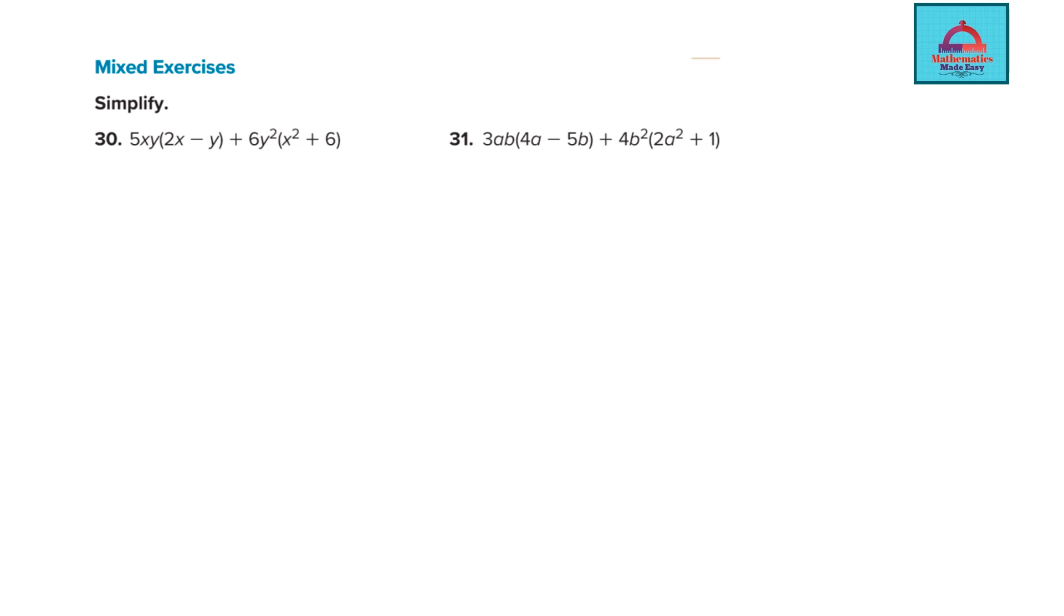Here also you are going to multiply and then the result is to be added. Okay so we understand the question first and now we begin. Now remember whenever you see multiplication of polynomials means you see brackets just like this one. These are bracket terms. You will always apply distributive property or the distributive law.